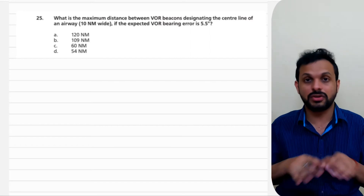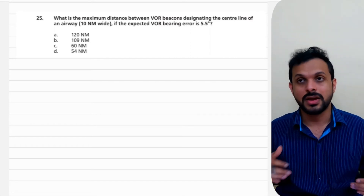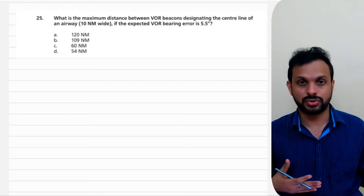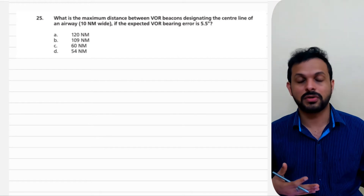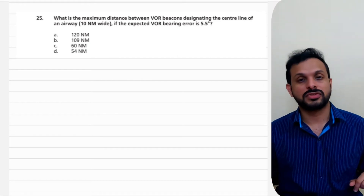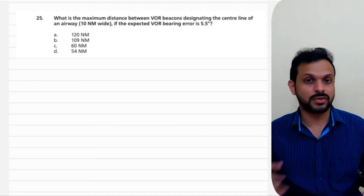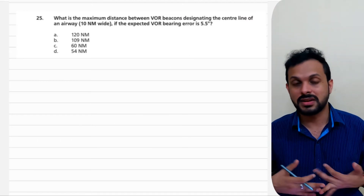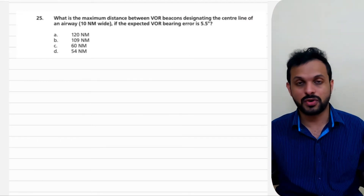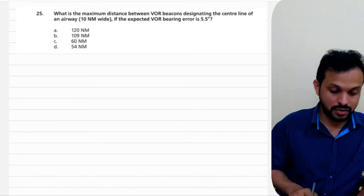In this question, you have two different VORs which designate an airway. Airways are just like roads — like highways — which are designated using radio navigation aids. It could be a VOR, NDB, or VOR and VOR, and so on and so forth. And here we have two different VORs.